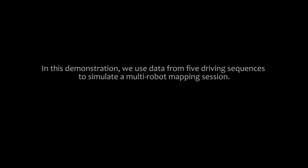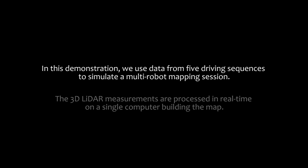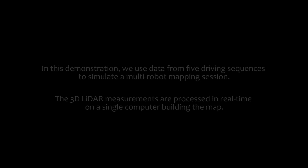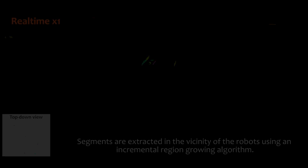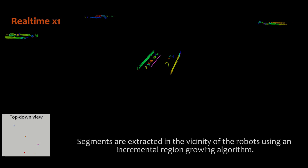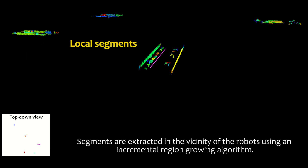In this demonstration, we use data from five driving sequences to simulate a multi-robot mapping session. The 3D LIDAR measurements are processed in real-time on a single computer building the map. We first extract segments in the vicinity of the robots using an incremental region-growing algorithm.